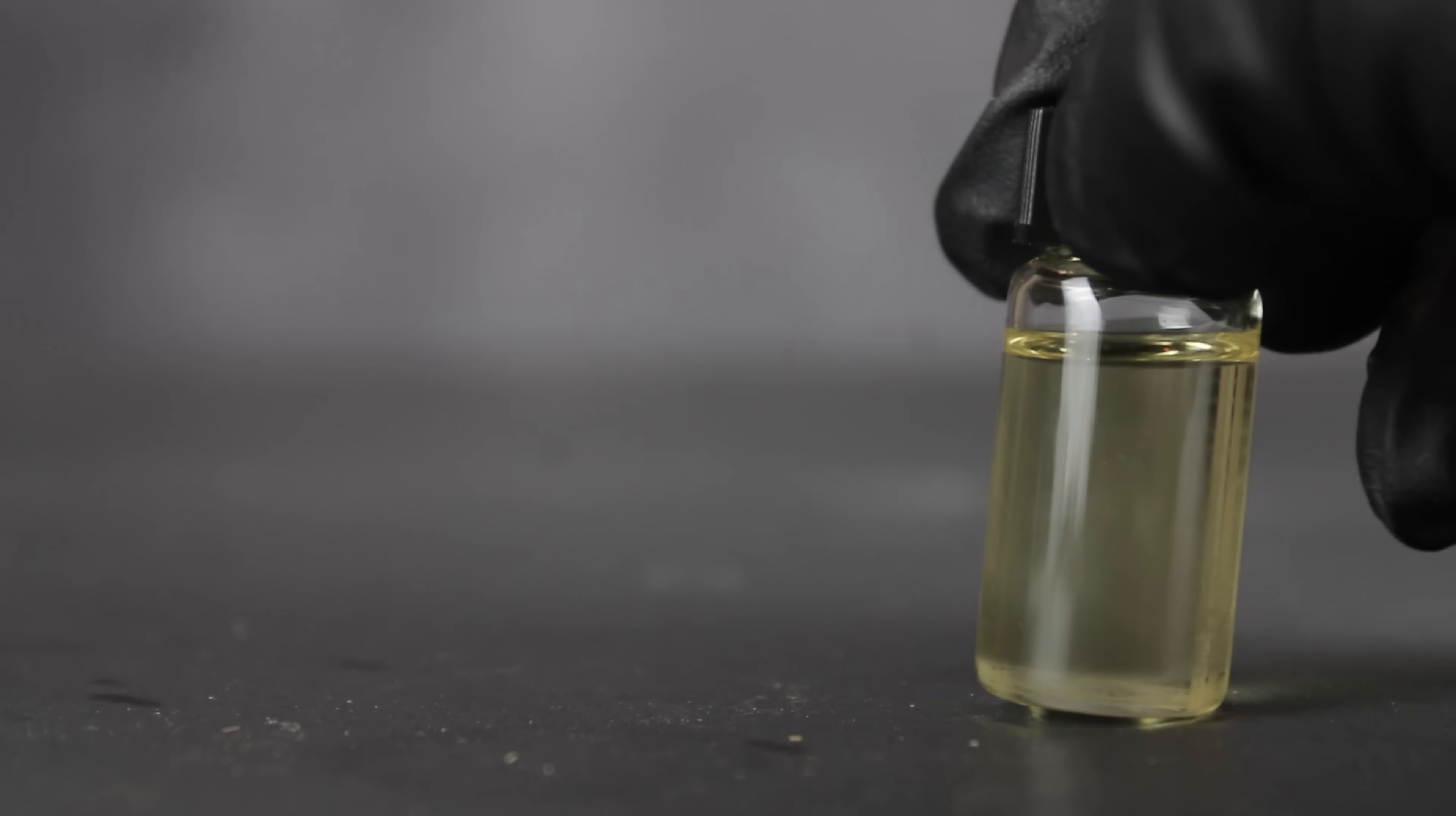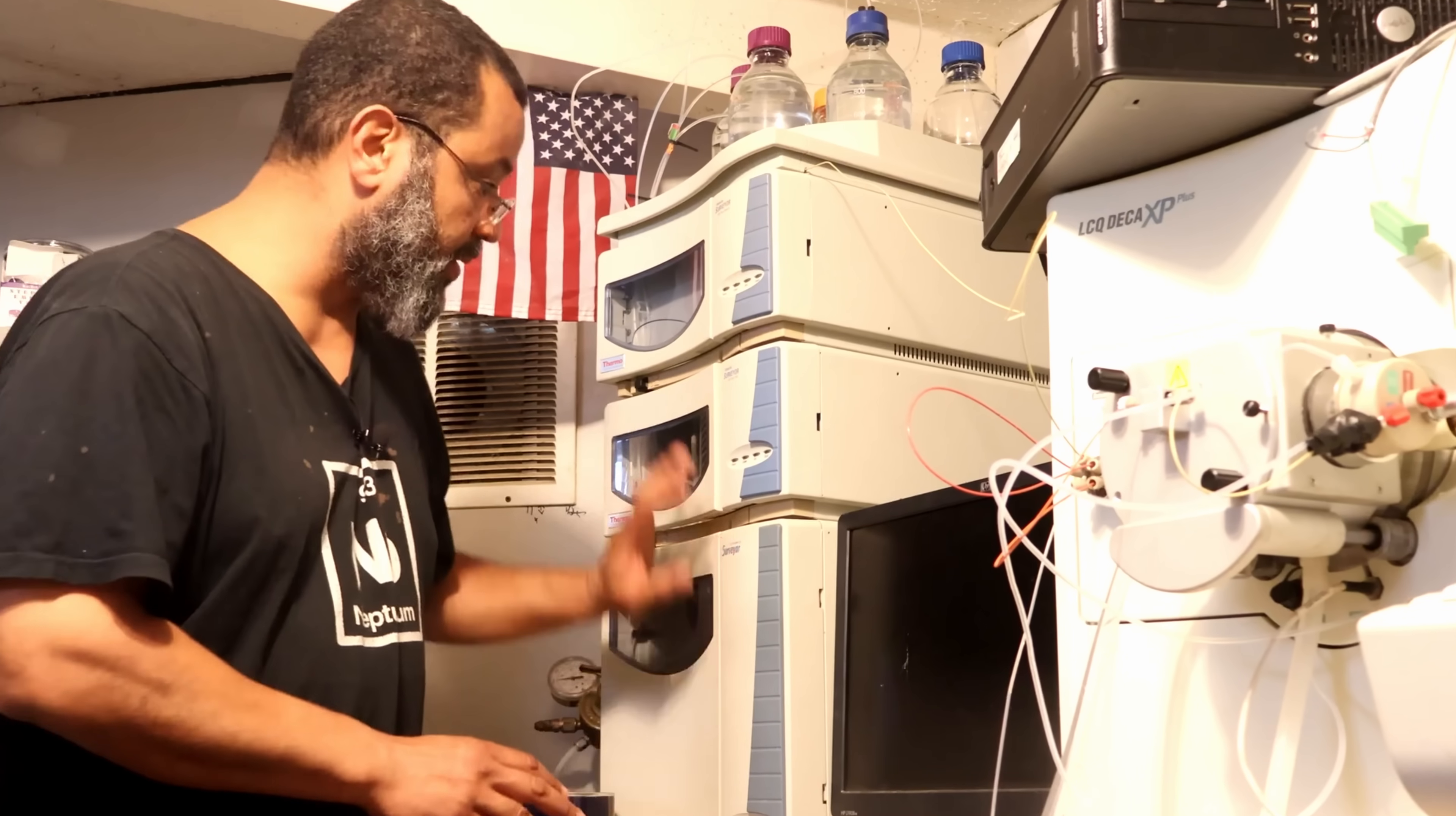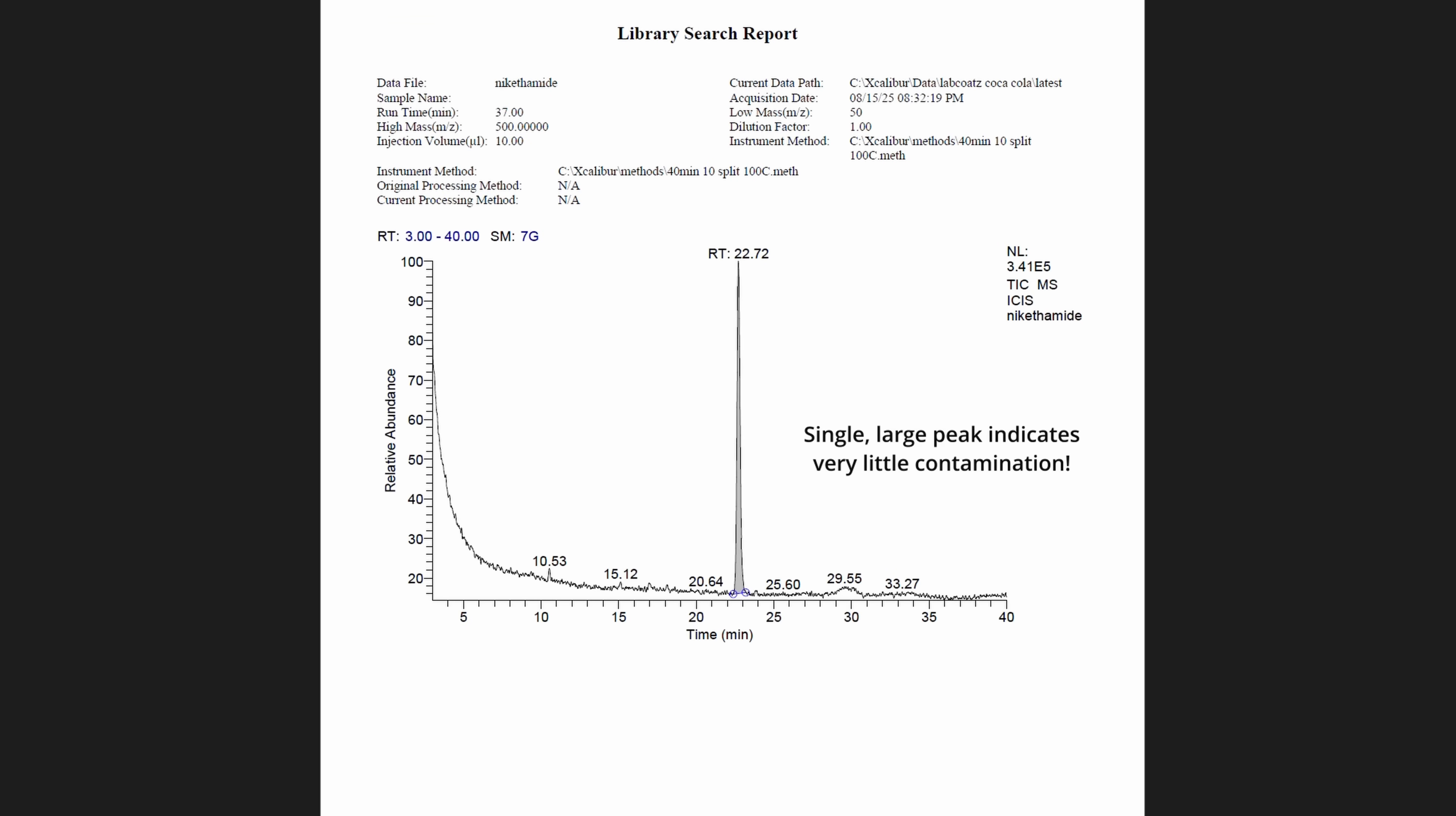To be sure this was my product though, and that all the impurities were removed, I decided to mail a sample to Vince over on Neptunium, who was willing to run it through his mass spectrometer. This is essentially a big machine that tells you what something is made of. And thankfully, my sample did turn out to be basically pure nikethamide. Great to confirm my chemistry was on point in this episode.